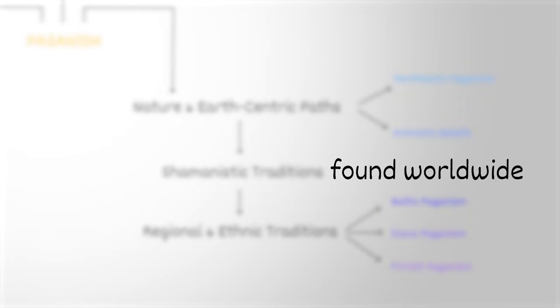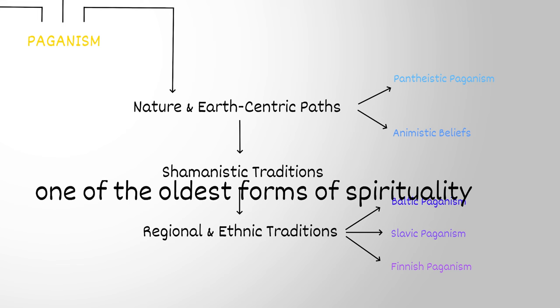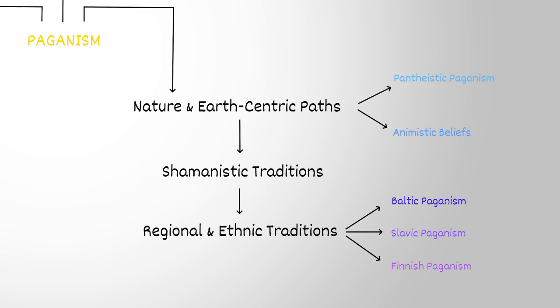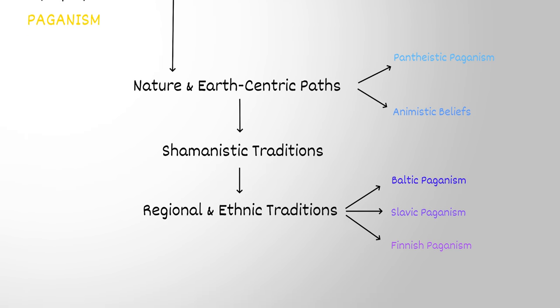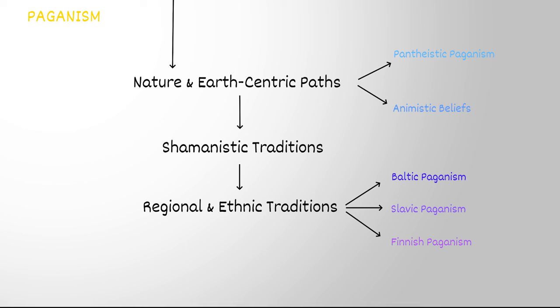Shamanism is found worldwide and is one of the oldest forms of spirituality. Finally, there are belief systems specific to certain geographical regions. These regional or ethnic traditions can vary, reflecting the unique landscapes and histories of the regions. Baltic, Slavic, and Finnish paganism are some popular types.